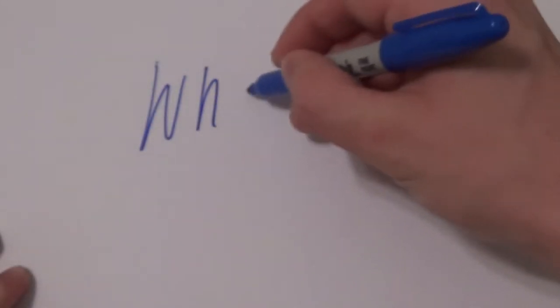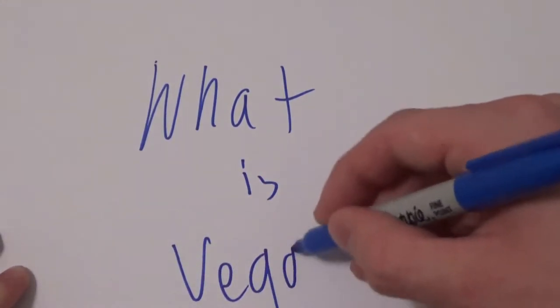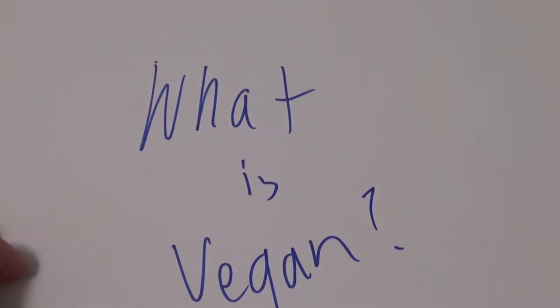So what is vegan? Vegan is when you stop eating meat and anything produced from an animal. You're not allowed to eat eggs or milk or anything that is produced from an animal like cows, goats, chickens, whatever.